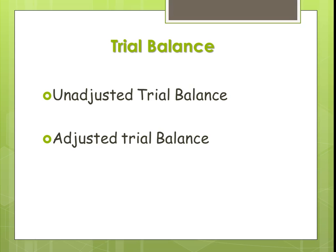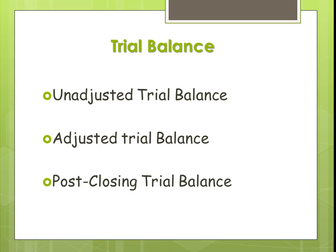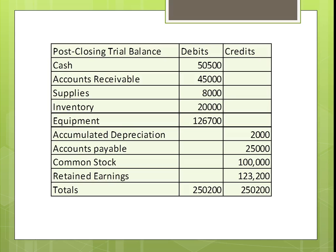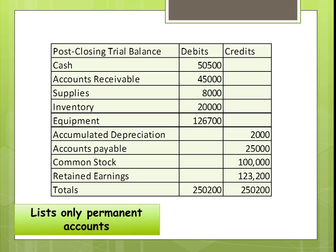To recap: the first trial balance was the unadjusted trial balance, run at the end of the month to see if debits equal credits, if balances are normal, and what accounts may need adjusting. Once we do adjusting entries to record any revenues or expenses that need to be recorded, we do an adjusted trial balance, which is used to prepare the financial statements. Then we do one more trial balance after zeroing out nominal accounts — it's called the post-closing trial balance, and as you can see, it only lists permanent accounts. This ends Chapter 3.